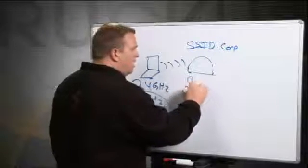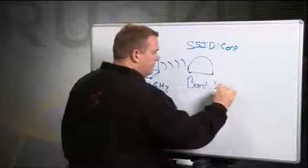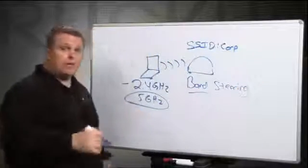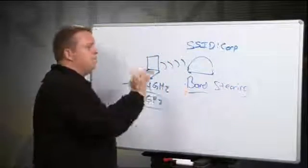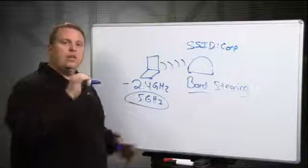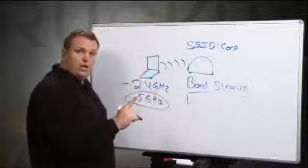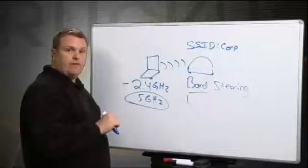This is called band steering. Notice we've talked about beam forming and beam steering a lot, but make sure you understand this is band steering. Band steering is the ability for, number one, the access point has to know that this is a dual band device.